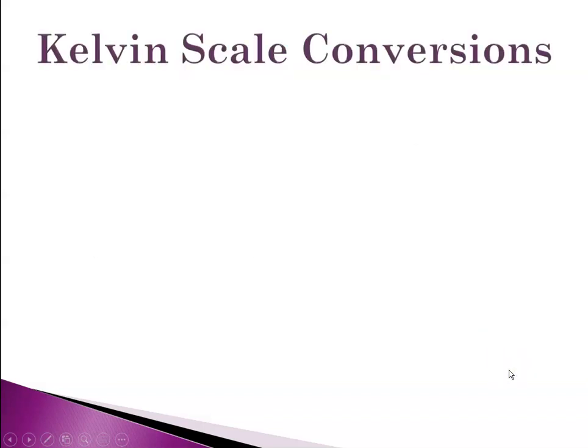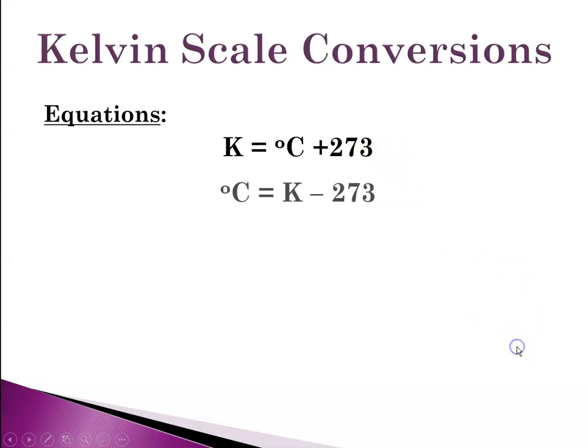So converting between C and K, and we won't worry about Fahrenheit anymore. There's two equations. To get to Kelvin from degrees C, you add 273. Even though it's 0.15, we're just going to use 273. And then for degrees C from Kelvin, you just subtract 273.